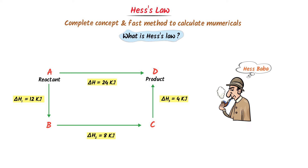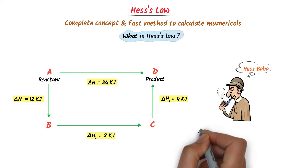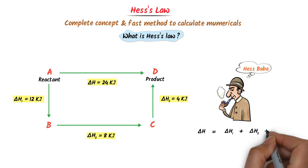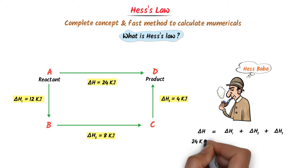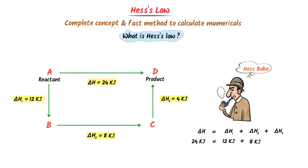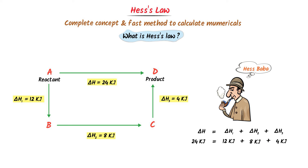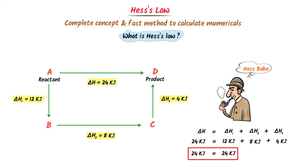And this C absorbs ΔH₃ = 4 kilojoule and converts to D. Hess's Law states that ΔH = ΔH₁ + ΔH₂ + ΔH₃. He means that in the first step, ΔH = 24 kilojoule, ΔH₁ = 12 kilojoule, ΔH₂ = 8 kilojoule, and ΔH₃ = 4 kilojoule. After calculation, I get 24 kilojoule is equal to 24 kilojoule. Left-hand side is equal to right-hand side.